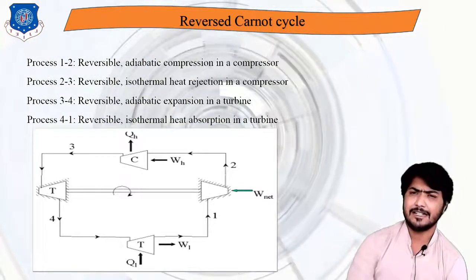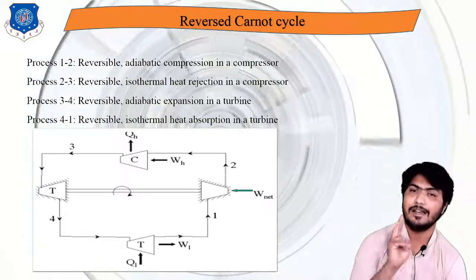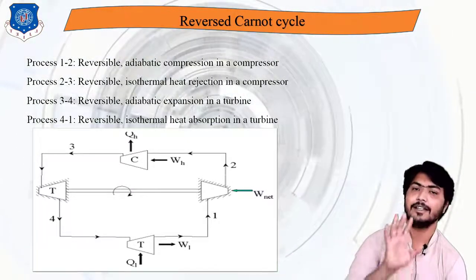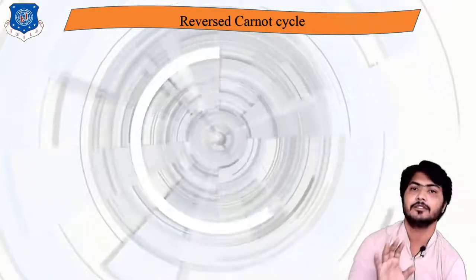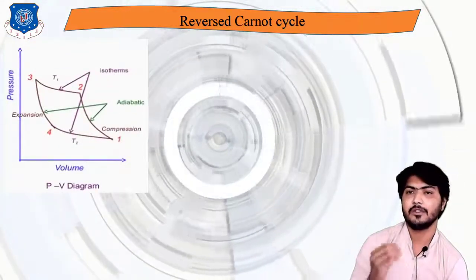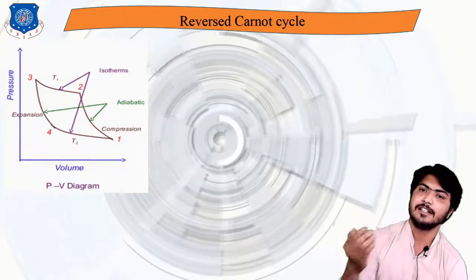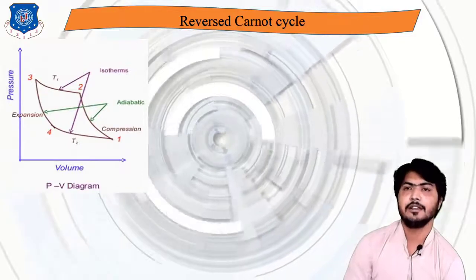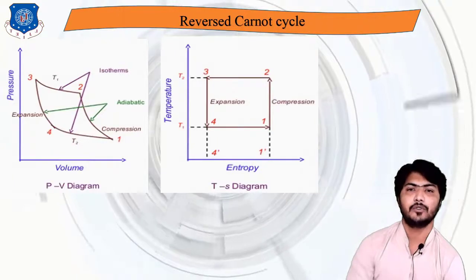Keep in mind: two reversible adiabatic processes and two isothermal processes are used in this cycle, which we already studied in thermodynamics. We draw a PV diagram where 1 to 2 is adiabatic, 2 to 3 is isothermal, 3 to 4 is adiabatic, and 4 to 1 is isothermal. We also look at the TS (temperature-entropy) diagram for all four processes.